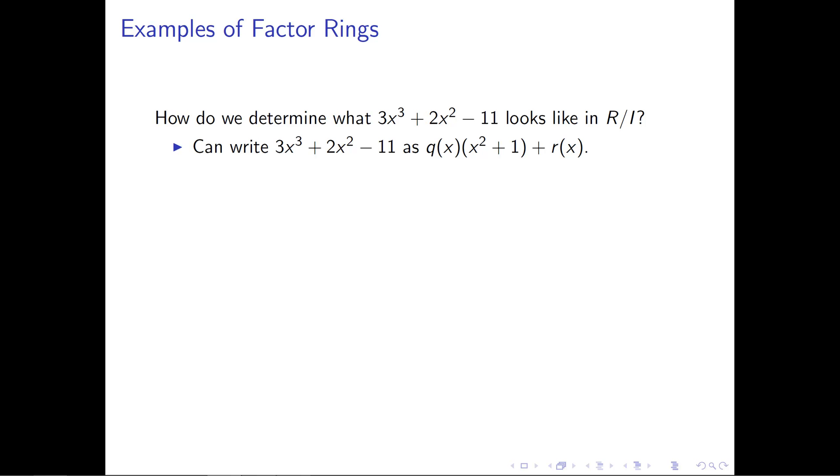Now we actually have a handful of different ways to do this. The first way that we could do this is we could do as I suggested on the previous page. We could take this polynomial, 3x cubed plus 2x squared minus 11, and I could write it as q of x times x squared plus 1 plus a remainder. So I could figure out what multiple of x squared plus 1 it is, and I could figure out what the remainder is. And that's one way I could figure out whatever the remainder is, that's what this polynomial looks like in R mod i.